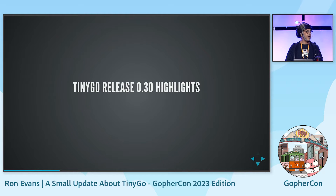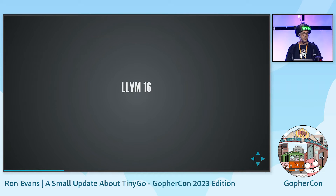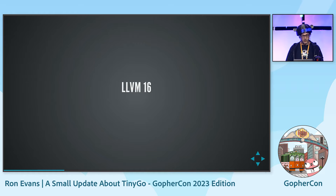A few highlights from our recent 0.30 release that just came out right in time for this wonderful conference. TinyGo uses LLVM under the hood — the same compiler toolkit that Rust, Zig, Swift, and a few other languages use. We now support LLVM 16.